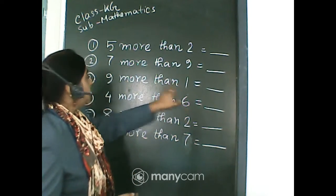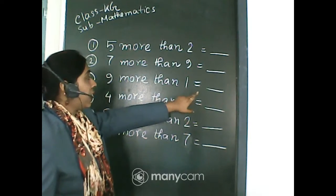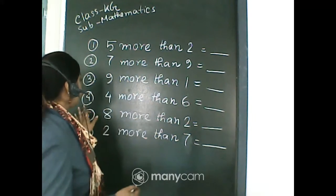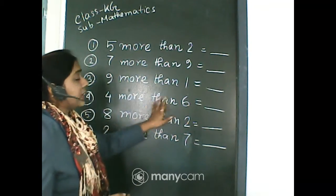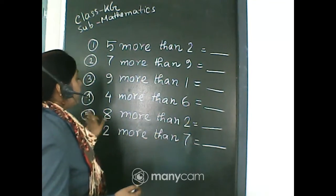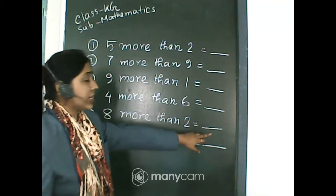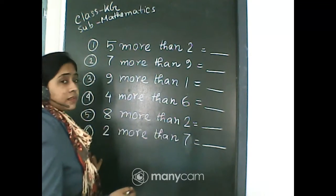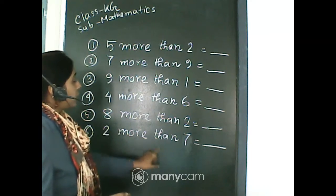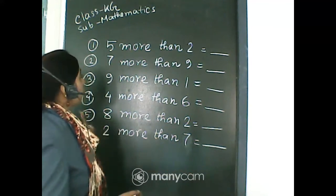Number three: nine more than one equals dash. Number four: four more than six. Number five: eight more than two equals dash. Number six: two more than seven equals dash. This is your first activity, number A, based on 'more than'.